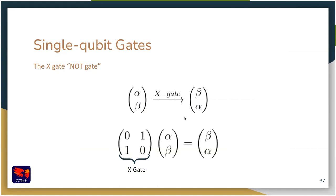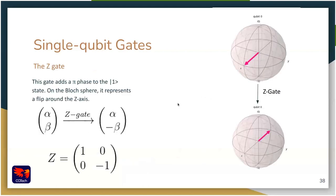Mathematically, the X gate and all gates can be represented as matrices multiplied on the state vector. The X gate matrix is: 0, 1 / 1, 0. You can check that it does in fact flip between the two probability amplitudes. Now let's see the Z gate. This gate represents a flip around the Z axis. It basically just changes the phase of the system.